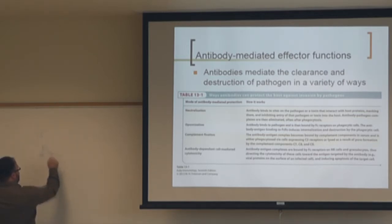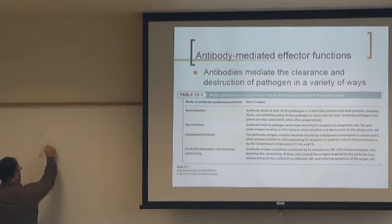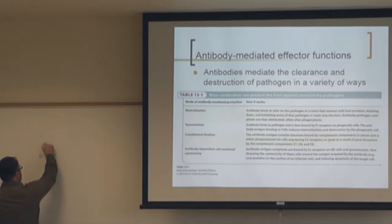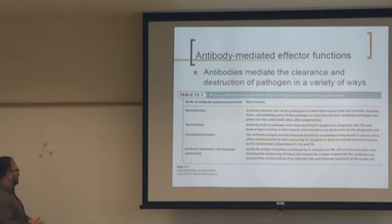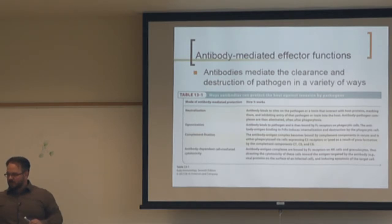The variable region of the antibody binds to an antigen, while the constant regions — which are not variable — bind to an FC receptor. That FC receptor recognizes non-specifically just a certain isotype, a certain constant region. It binds to that and triggers a signal into the cell to internalize the entire complex and break it down.